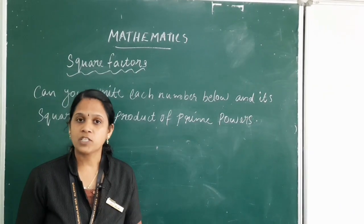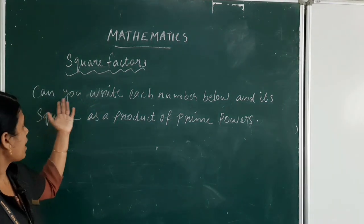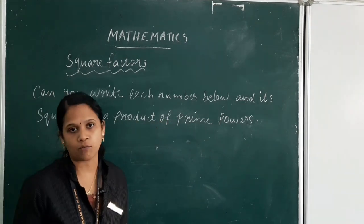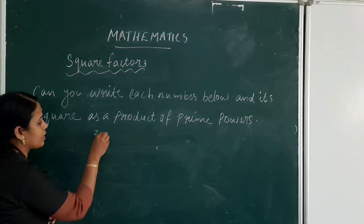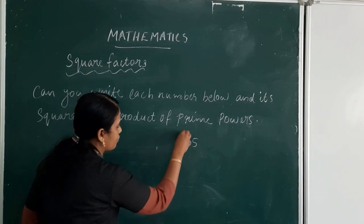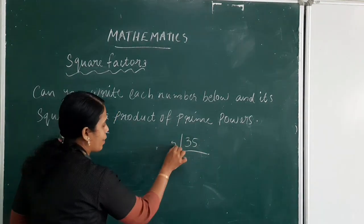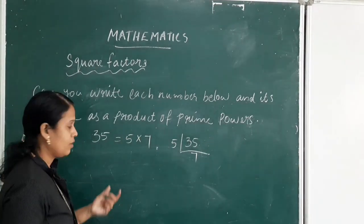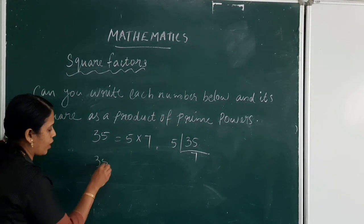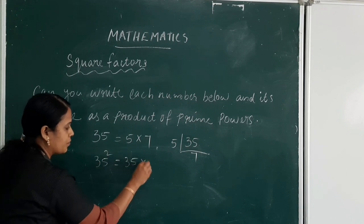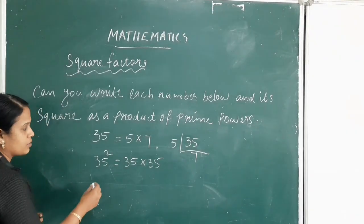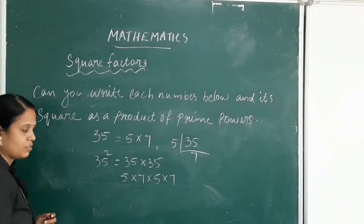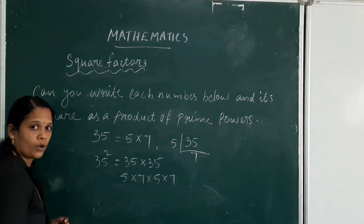Now the textbook questions: write each number below and its square as a product of prime powers. First one: 35. 35 is divisible by 5, giving 7. So 35 = 5 × 7, with 5 appearing twice and 7 also twice.